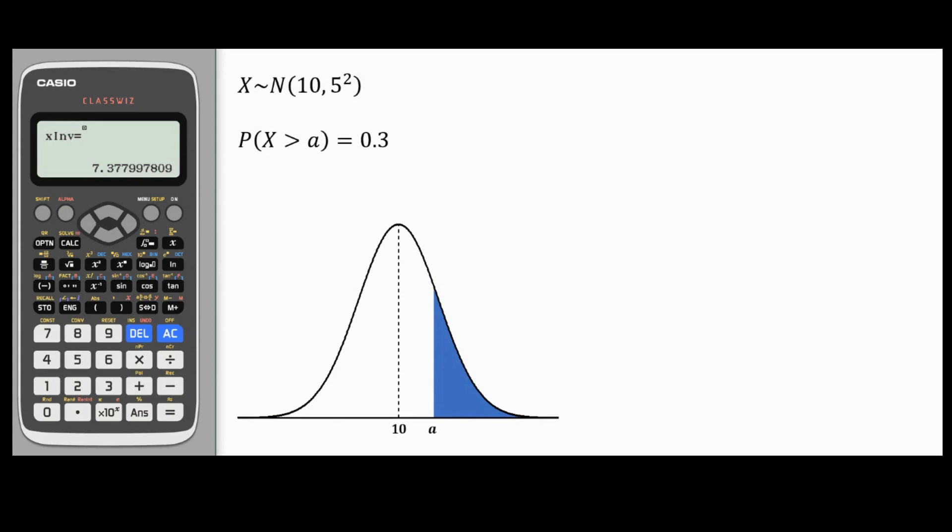In the next example, I have a probability of 0.3 on the right tail. So I'll have to do some algebraic manipulation. I'm going to change this to 1 minus probability X less than A equals 0.3, which implies that the green area is equal to 0.7. Again, I'll go to the inverse normal. I'm going to change the area from 0.3 to 0.7 and this will give me 12.6, which is the cutoff point at A.